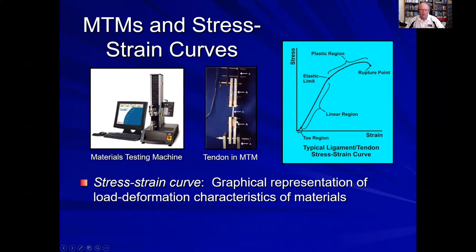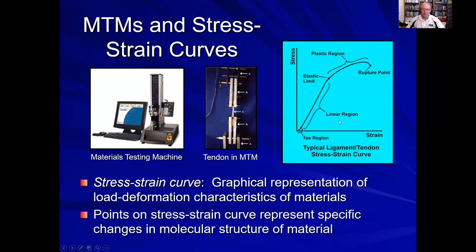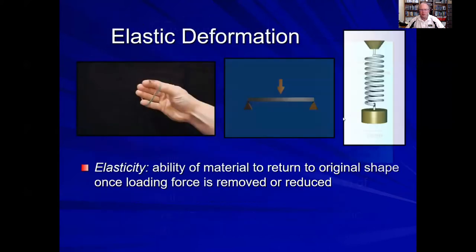However, if we take that same tendon or ligament and load it too much, it's going to partially tear, completely tear, or completely rupture — and that is what we would call a plastic deformation. These points on the stress-strain curve are caused by changes in the molecular structure of the material, changes in macro and microstructure that then change its stress-strain behavior in the materials testing machine.